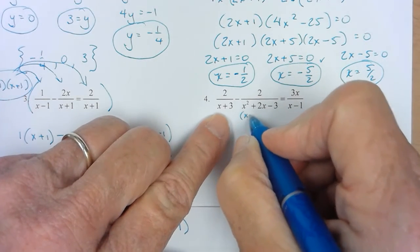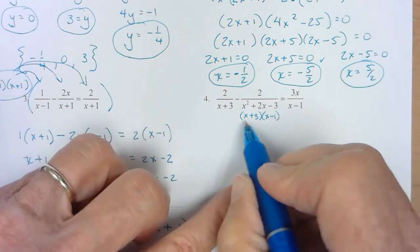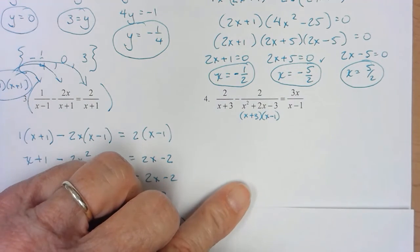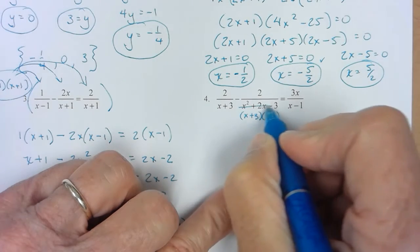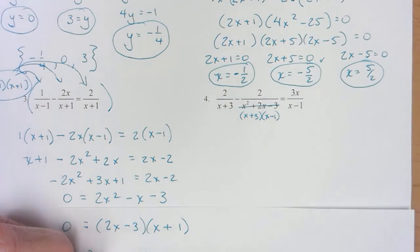So let me write this right under here. Foil that and see if it doesn't come up to be that. It does. My common denominator is going to be that combination. So let me get a different colored pen.